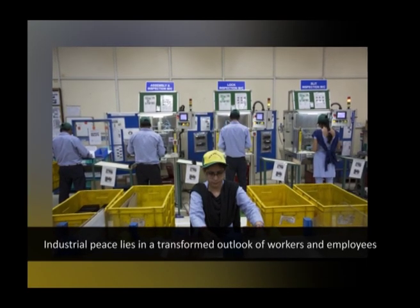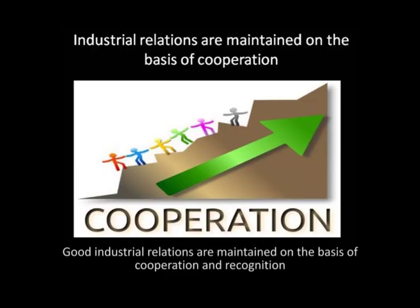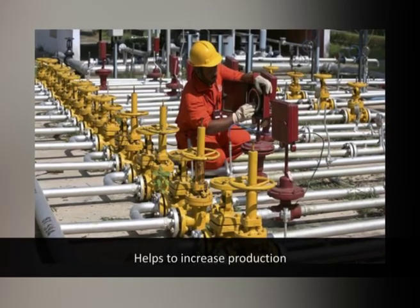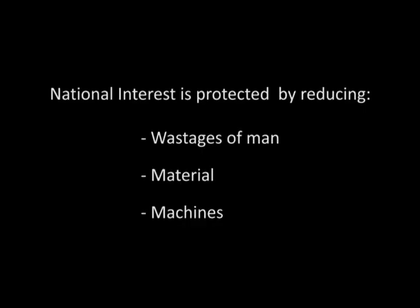Mental revolution is also a key objective. The main object of industrial relations is a complete mental revolution of workers and employees. Industrial peace lies ultimately in a transformed outlook on the part of both parties. It is the business of leadership — among workers, employees, and government — to work out a new relationship in consonance with the spirit of true democracy, which will naturally impact production. Reduced wastage is also important: good industrial relations are maintained on the basis of cooperation and recognition of each other, reducing wastage of man, material and machines to the minimum.